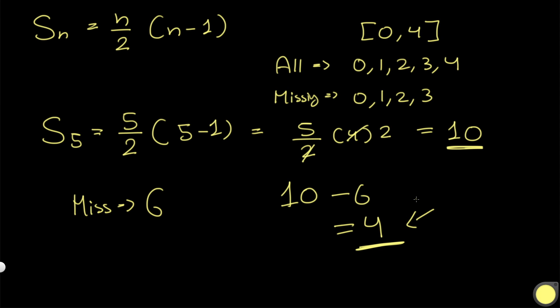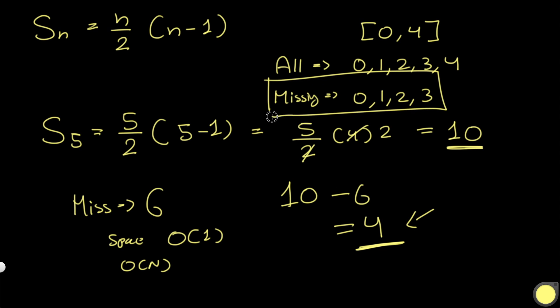As you can see, we're not using any extra data structure, so this runs in O(1) space. The time complexity is O(n) since we're just iterating to find the sum of the numbers we have.